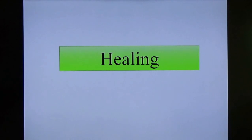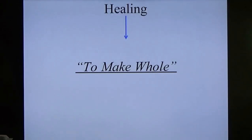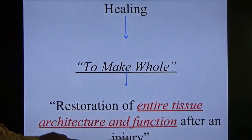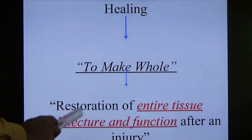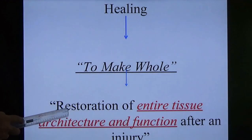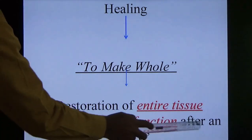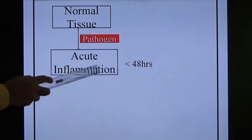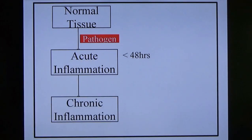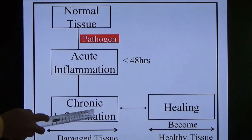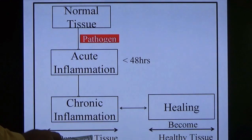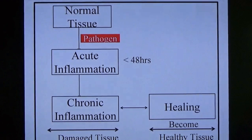Now we will see about healing. Healing — word meaning is 'to make whole.' Better meaning: restoration of entire tissue architecture and function after injury. I told you healing occurs simultaneously in chronic inflammation — chronic inflammation and healing occur together. Simply put: the injured tissue will become healthy tissue — that is known as healing.